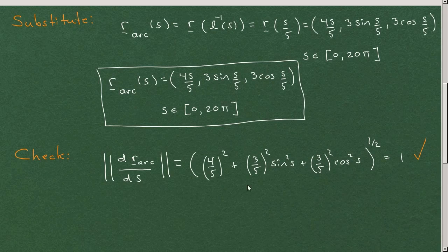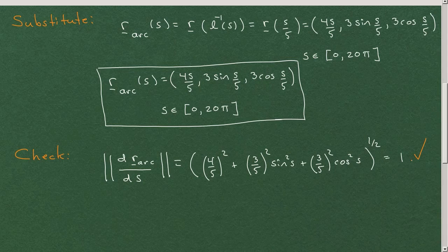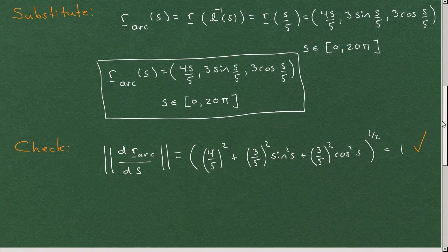As a rule, I would say you should always just check that you have an arc length parametrization by differentiating the resulting expression and verify that the modulus is always 1. And that's my first example on reparametrizing by arc length.